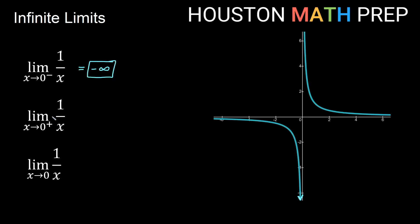For the second one, approaching 0 as an x-value from the positive side, we'll be in quadrant 1, going up unbounded, which means we're heading toward positive infinity from the right of 0. Now for the overall limit as x approaches 0, we are going to a negative infinite value on one side and a positive infinite value on the other side. Since these are not the same, the overall limit does not exist.